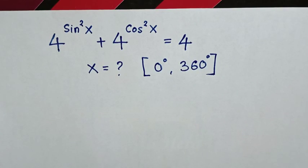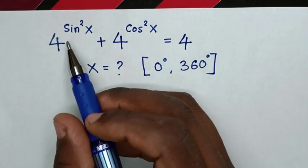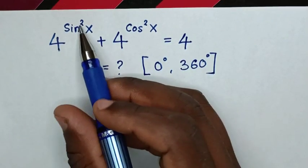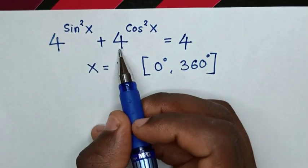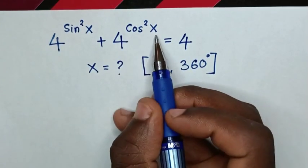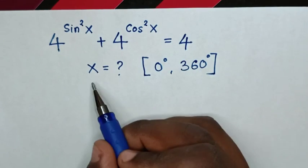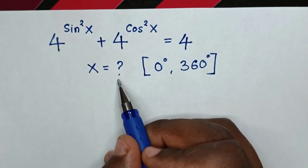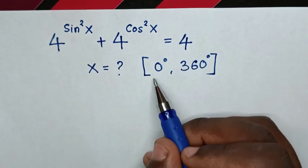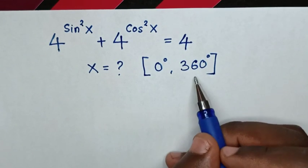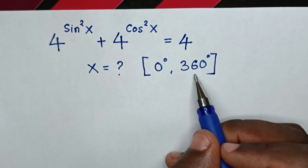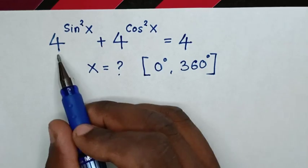Hello. How to solve 4 power of sine x squared plus 4 power of cos x squared is equal to 4, to find the value of x such that x is from 0 to 360 degrees.